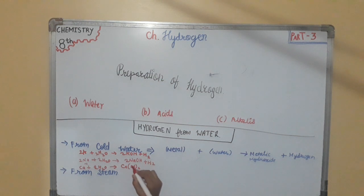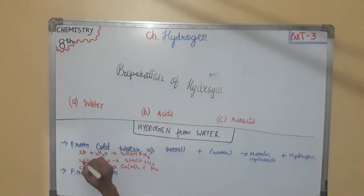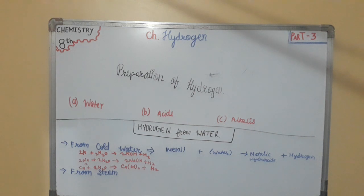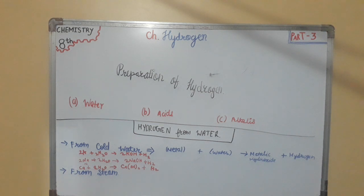For calcium: Ca + 2H₂O → Ca(OH)₂ + H₂, which is only slightly vigorous compared to the other two. Metals like magnesium, aluminium, zinc, and iron do not liberate hydrogen when reacting with cold water, but when hot steam is passed over them, they do liberate hydrogen.